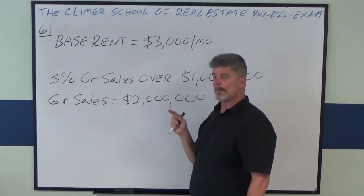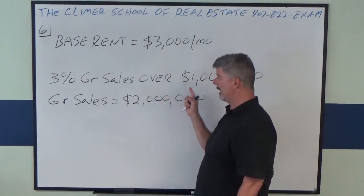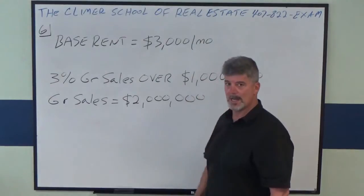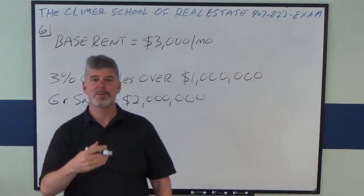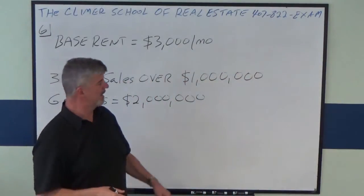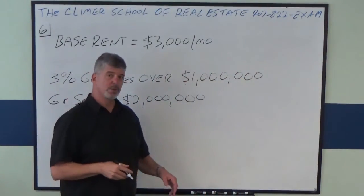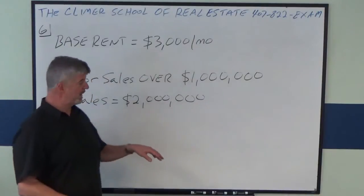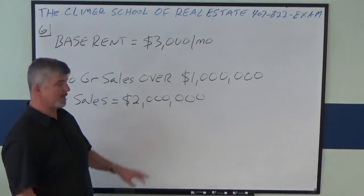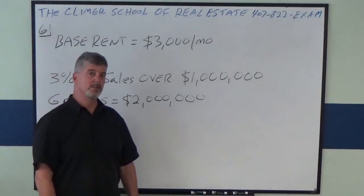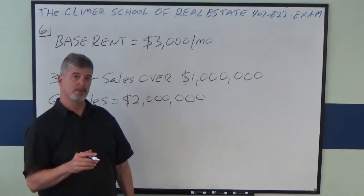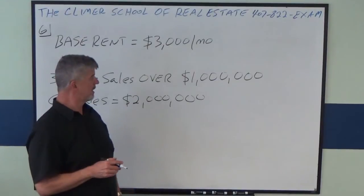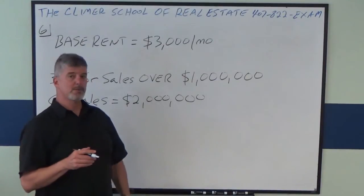Now, if gross sales get over a million dollars, they're going to start paying an extra 3% over that. They had a good year — gross sales came in at $2 million. The question is, what's the annual rent based on those numbers?